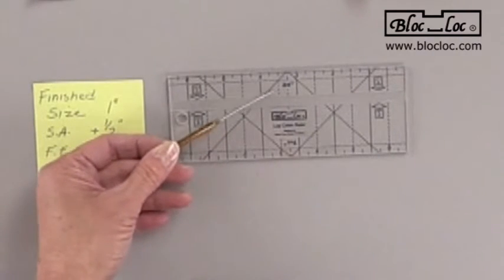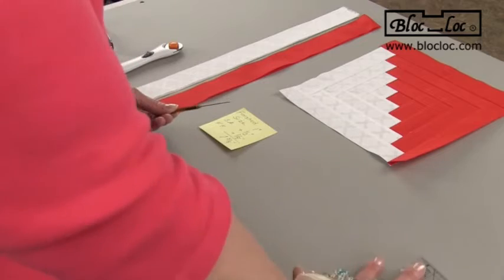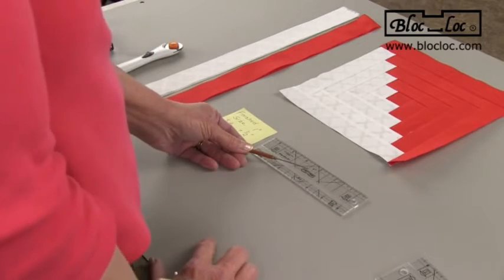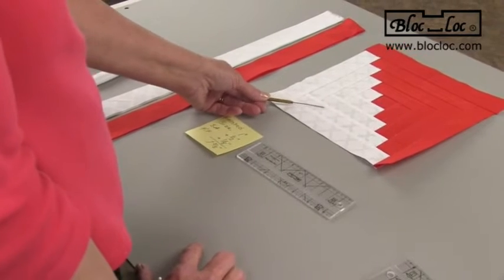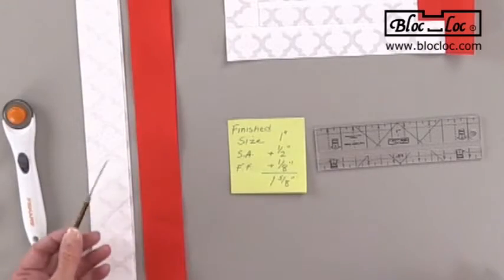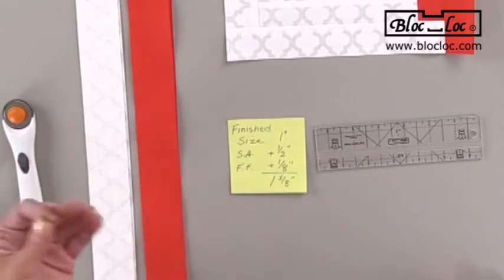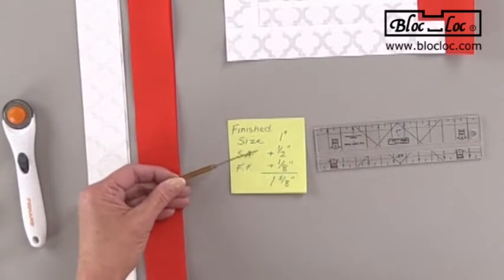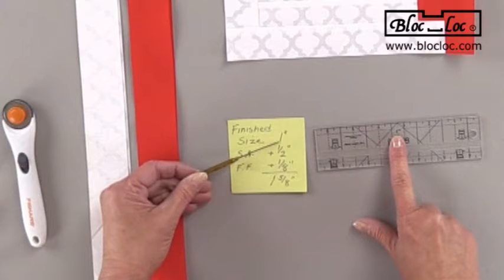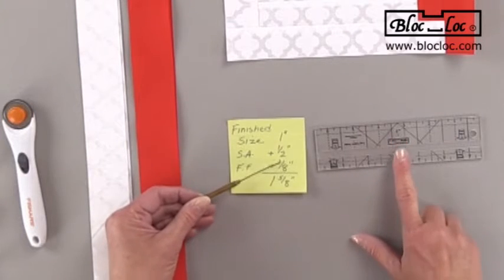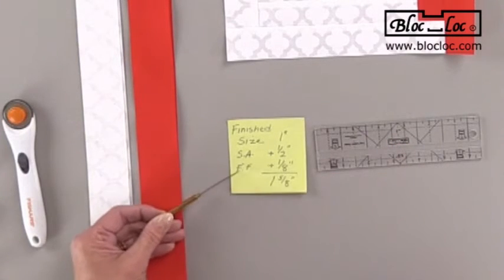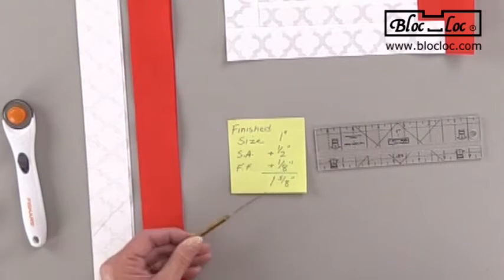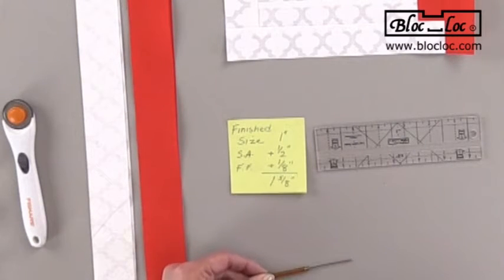We're actually working with this one today. We're going to make one inch finished logs, and that's my sample here. I've already starched my fabric ahead of time and determined the width of my strip. So one inch finished that's printed on the ruler, plus half an inch seam allowance, plus my fudge factor of an eighth of an inch. And so my strips were cut one and five eighths inch wide.